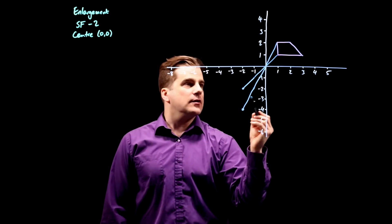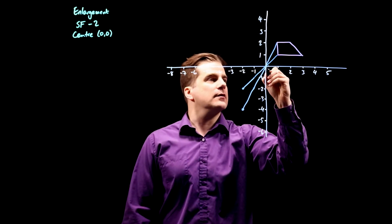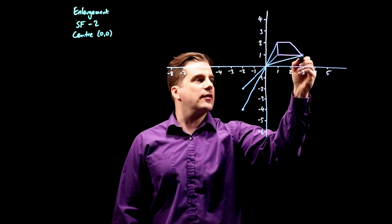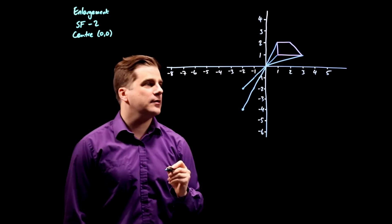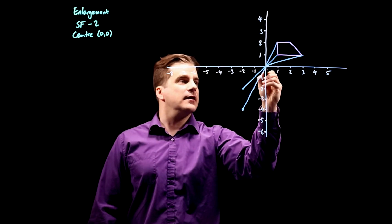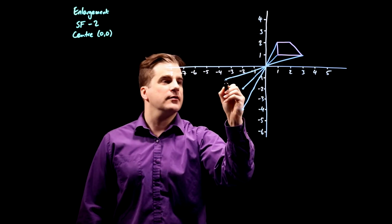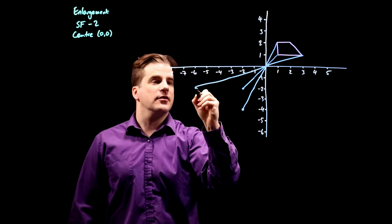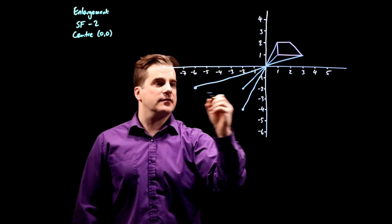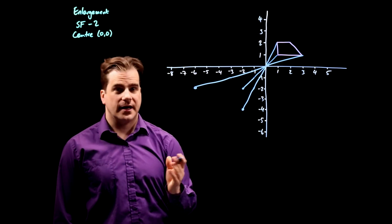Right, let's do it with this point now. So that is three long and one up. So it's going to be three long and one down here to there. And then again, three long and one down will take it to there. Minus six, minus two. Making sense?